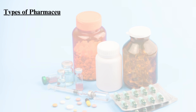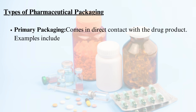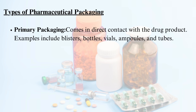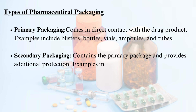Types of pharmaceutical packaging: Primary packaging comes in direct contact with the drug product; examples include blisters, bottles, vials, ampoules, and tubes. Secondary packaging contains the primary package and provides additional protection; examples include cartons, boxes, and shrink wraps.